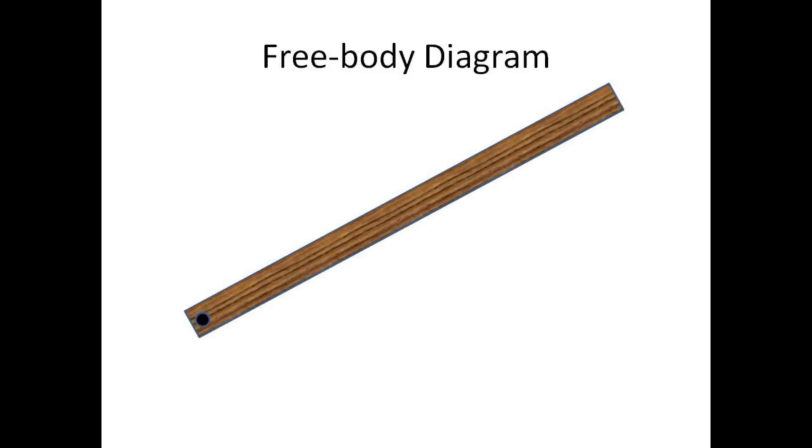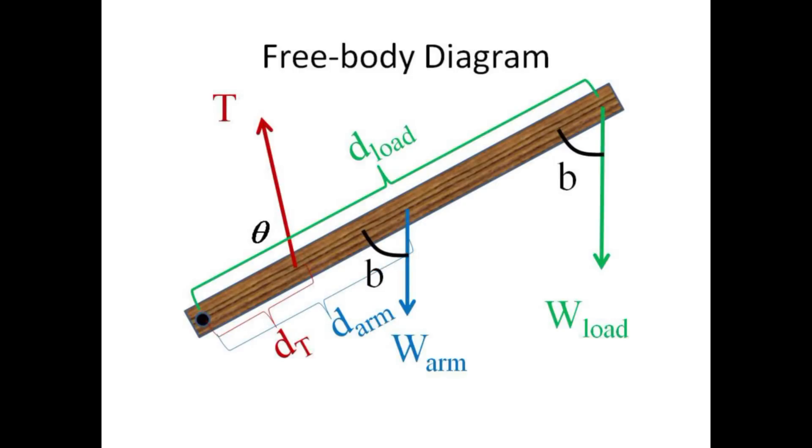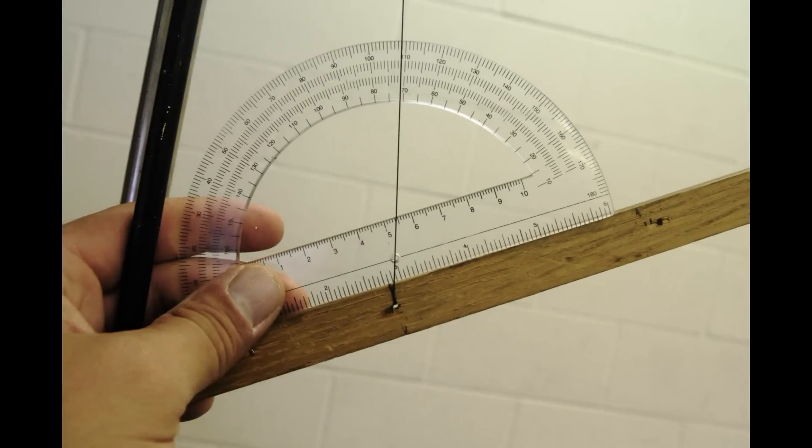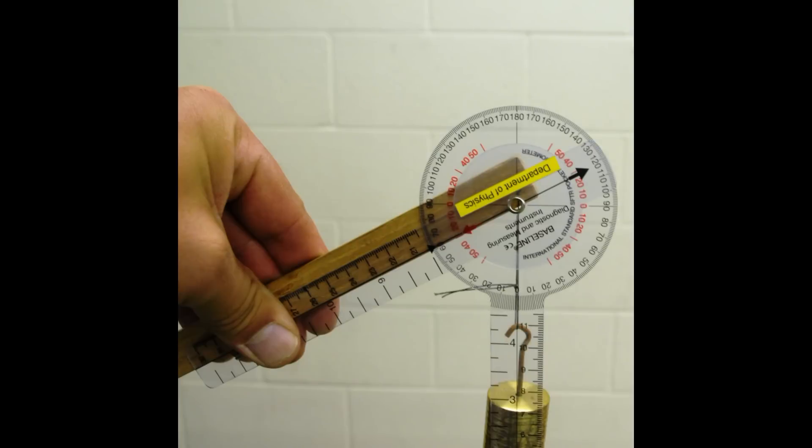The free body diagram now becomes slightly more complicated in that the weight of the forearm and the load act at the angle b relative to the forearm. The clockwise torques now involve the sine of b. A protractor can be used to measure the angle theta and a protractor or goniometer shown here can be used to determine the angle b.